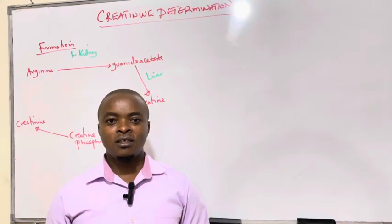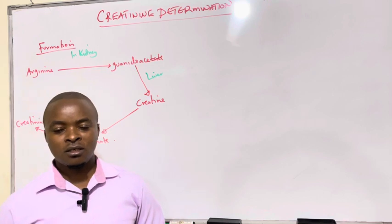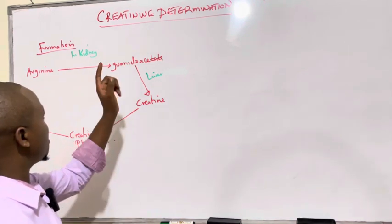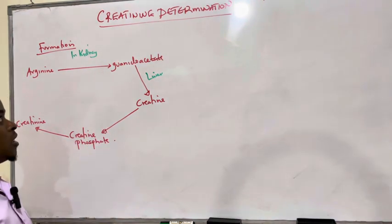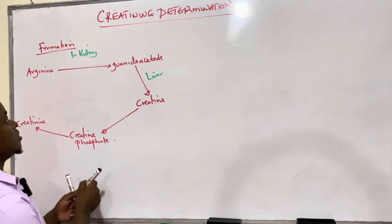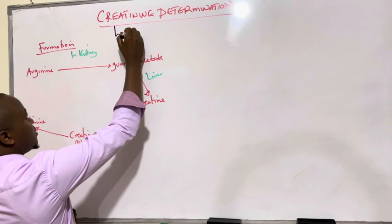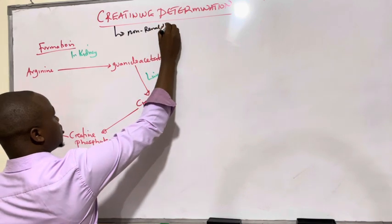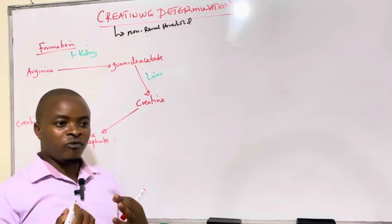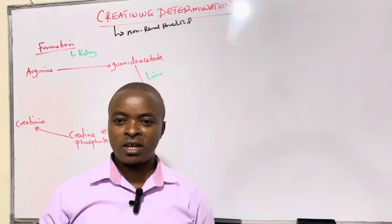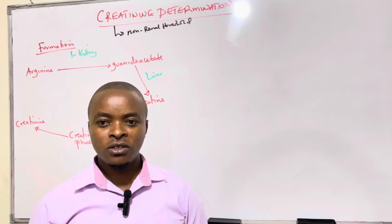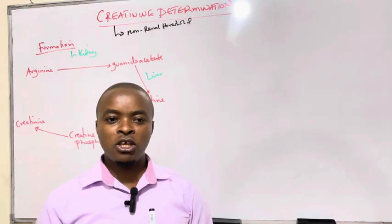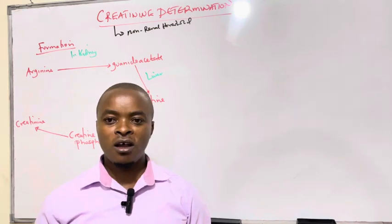In this session, we want to talk about the termination of creatinine, creatinine being the major waste product which is excreted in the urine. In the introduction, we saw that creatinine is a non-renal threshold substance, meaning whenever it is filtered as 10, it is found in urine as 10. It is neither reabsorbed nor secreted. This creatinine is endogenous, so it is an endogenous substance we normally use to determine GFR, or what we call glomerular filtration rate.